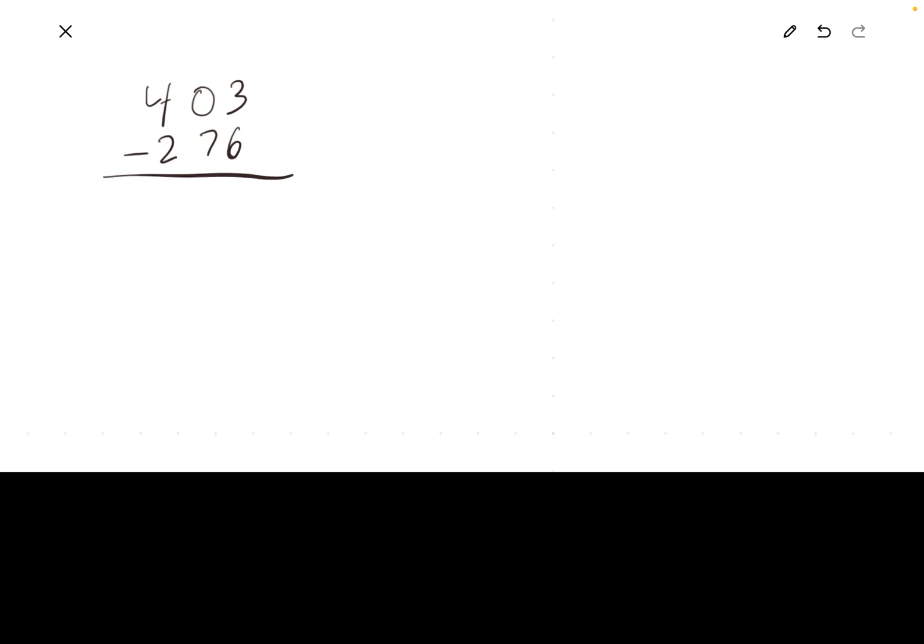And that's when you're subtracting and you have 0 tens in the minuend, or the top number. And here's the reason we call it the HTO method, is it's a place value chart labeled with H for hundreds, T for tens, O for ones.